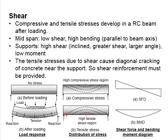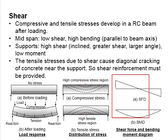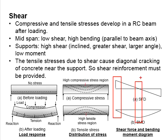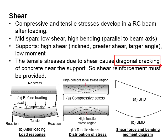Therefore, the development of the crack is most likely to go along the regions of similar tensile stress level. It is not likely to penetrate into the region which has a lower stress level. This forms a diagonal shear crack, and this crack is triggered by a high level of shear load acting near the support.